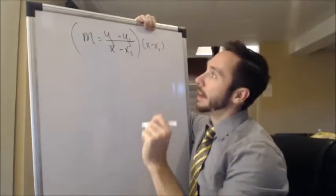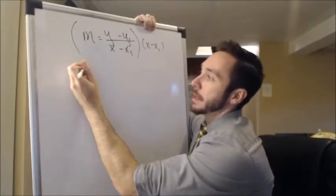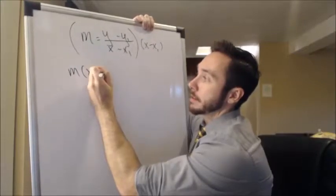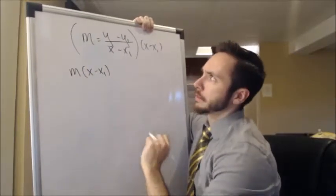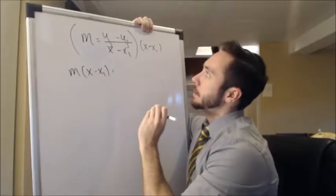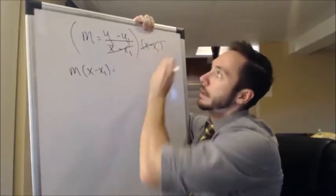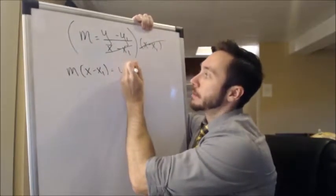Cool. On the left side, it's going to turn into m times x minus x₁. We're not going to worry about simplifying that just yet. And that's going to be equal to, well, these just cancel, y minus y sub 1.